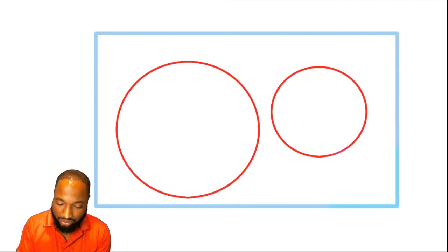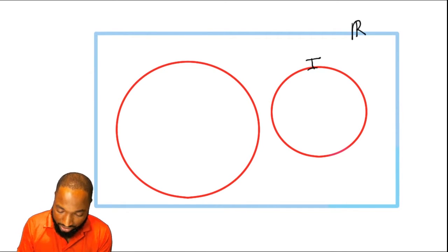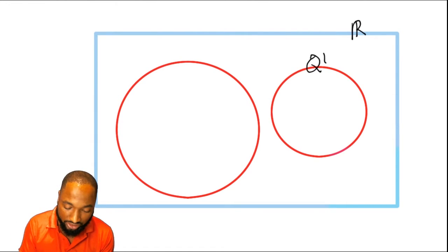We have a Venn diagram. The entire thing on the outside here we just put R. What does that mean? Real. Here we're going to put the irrational numbers. Let me put Q complement because that's a term we sometimes use to represent irrational numbers.